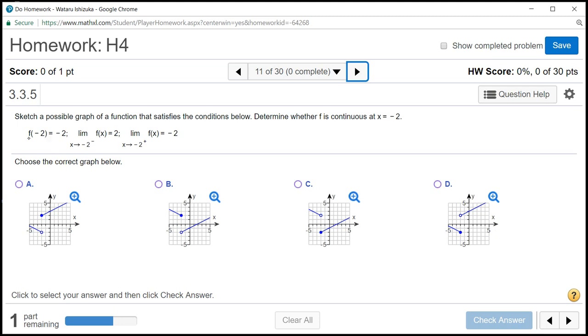It says that the function value at x equals negative 2 is negative 2. And the left-hand limit as x approaches negative 2 is 2, but the right-hand limit is negative 2. All right, so let's pick the correct picture here.